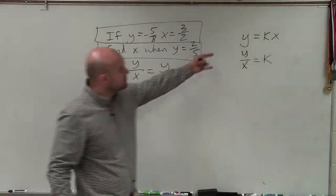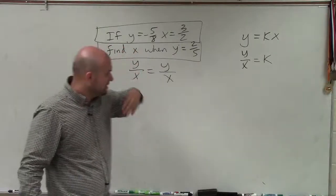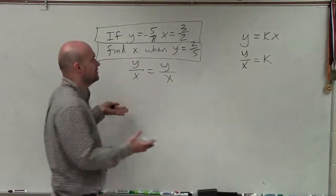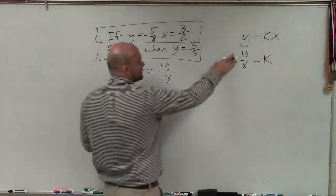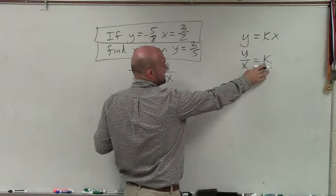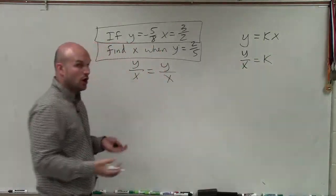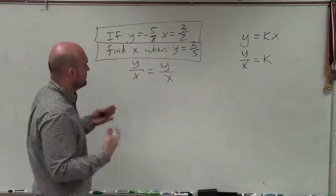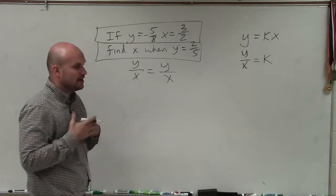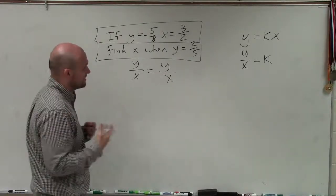So to do this, we have our two equations for direct variation. And what we simply want to do is set those two equations equal to each other. We're going to use this one because it doesn't have our k constant, which we don't know. I mean, we could figure out, but we just know that they're constant. Since they both vary, y varies directly with x, we can set them equal to each other.